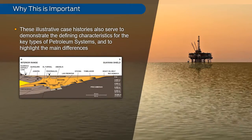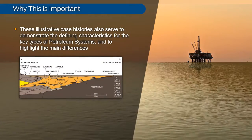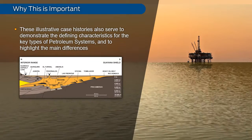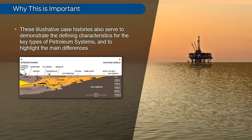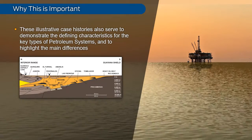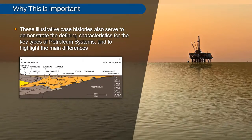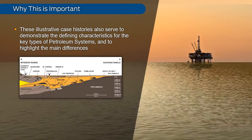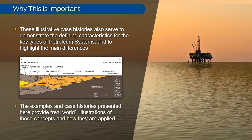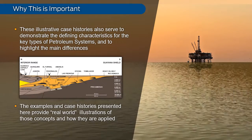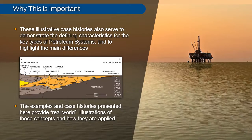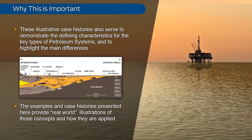These illustrative case histories, which are from areas of well-documented technical studies and industry activity, also serve to demonstrate the defining characteristics for the key types of petroleum systems, and to highlight the main differences between them. Having been introduced to the Basic Petroleum System Concepts, the examples and case histories presented here provide real-world illustrations of those concepts and how they are applied.